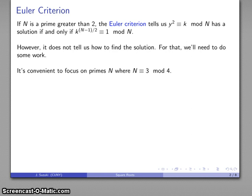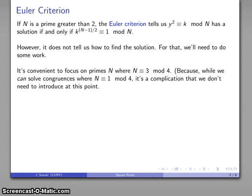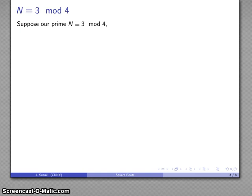It's convenient to break this problem into a number of cases, and the only case we'll discuss here is the case where n is a prime congruent to 3 mod 4. While we can solve congruences where n is congruent to 1 mod 4, that's a complication we're not going to introduce at this time. So suppose we have a prime where n ≡ 3 (mod 4), meaning n is 3 more than a multiple of 4 — a 4m+3 number.